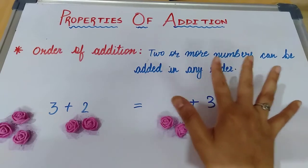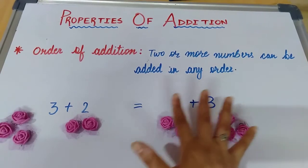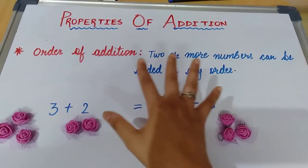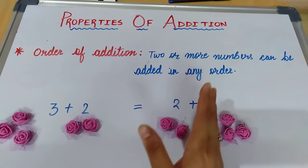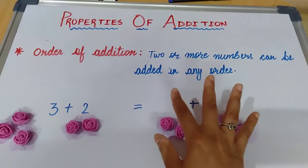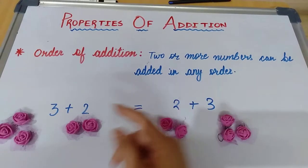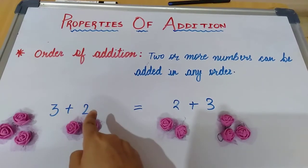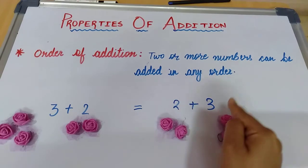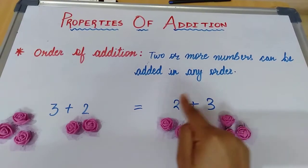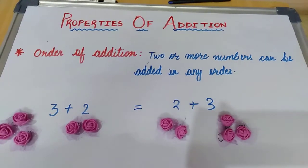Two or more numbers can be added in any order. Order of addition ka matlab hai ki do ya do se zyada number ko hum kisi bhi order mein add kar sakti, order matlab kisi bhi way mein add kar sakti. Chahe hum three mein two ko add karay ya two mein three ko add karay, toh hum kaise bhi kisi bhi number ko add kar sakti.